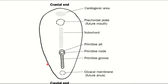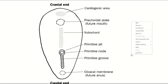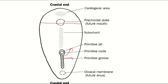The trilaminar germ disc is oval in shape because most cells derived from the primitive streak move forward and laterally, making the cranial diameter larger. Fewer cells move laterally and backwards, so the caudal end has a smaller diameter. That is all about the trilaminar germ disc. If you like this video, please press the like button and subscribe to my channel.